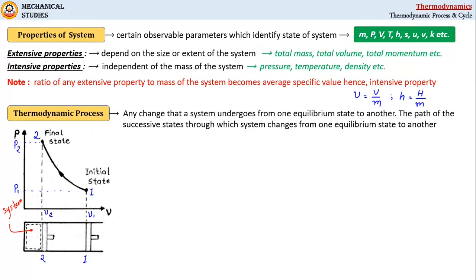Thus the path of successive states followed by a system during its change from one equilibrium state to another can be called a process.